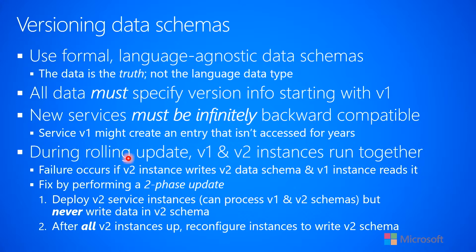A service version 1 might create an entry that isn't accessed for many years, but when you do access it you need to be able to read and understand it. If you're doing rolling updates, you have version 1 and version 2 instances running together. You do not want a version 2 instance to write to the database with a v2 schema and then have a request come into a version 1 instance that tries to read it — because the version 1 instance won't be able to read something written in the version 2 schema. This is very similar to updating network protocols, and failure occurs in exactly this scenario.